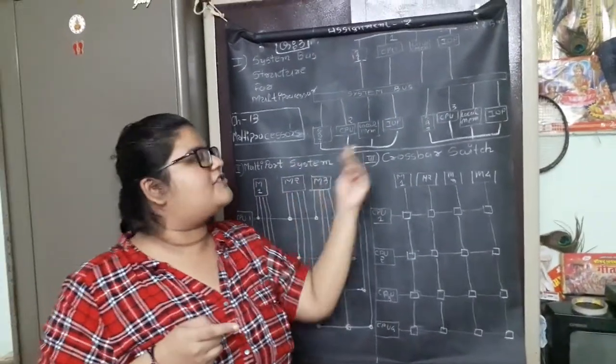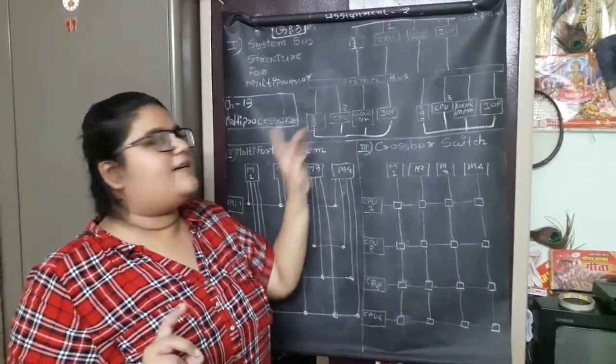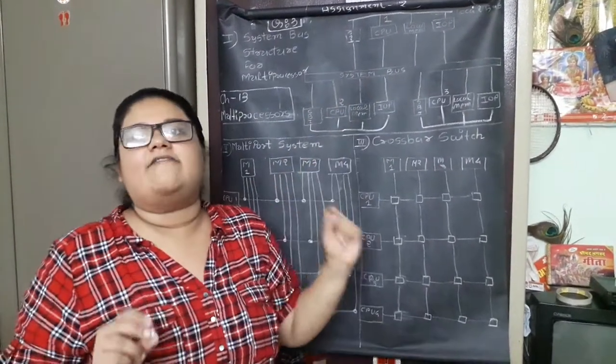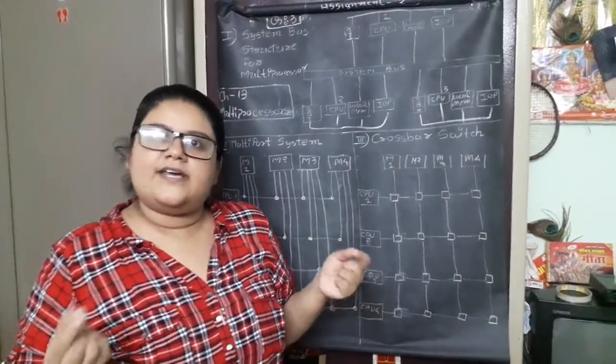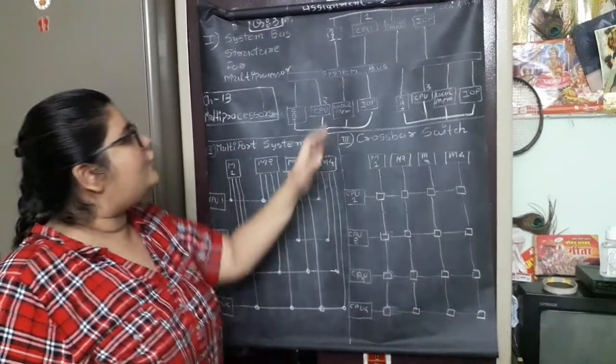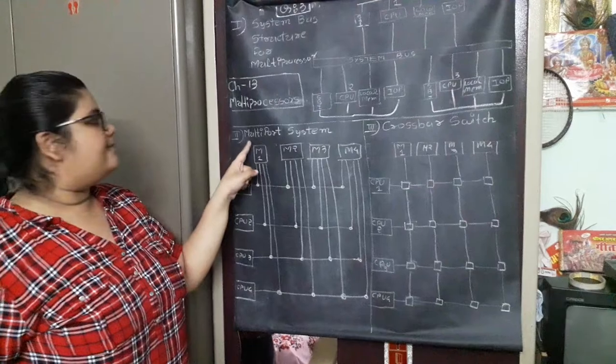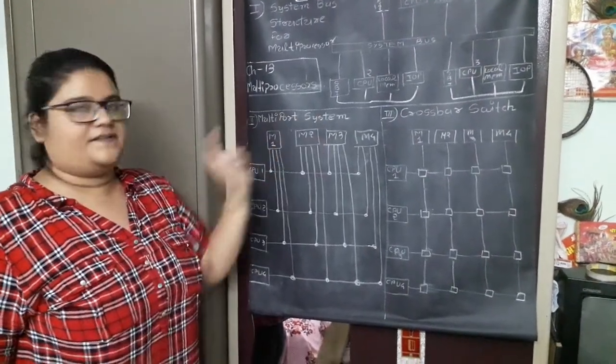The last problem with this structure is that, if no one is sending the data, but still they have to sense the channel every time, that is the bus free. If it is free, then they can start with the communication. The solution to this are these two techniques. Let us see the second one.